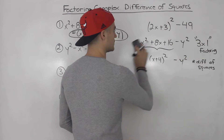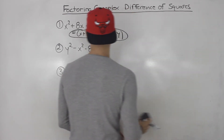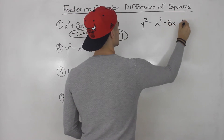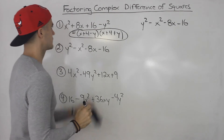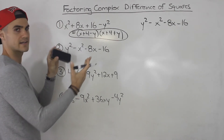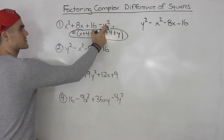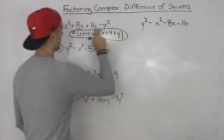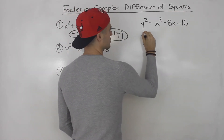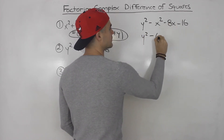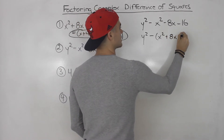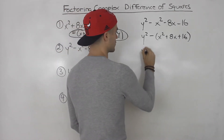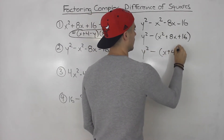Let's do number two. We've got y squared minus x squared minus 8x minus 16. Notice that this one is very similar to number one, but it's almost like the expressions have been swapped — the y squared is now at the beginning, and we have that same trinomial. The trinomial has different signs, but what we can do is factor out a negative from all three of those, and we'd be left with x squared plus 8x plus 16. That's a perfect square trinomial, so you would end up with x plus 4 squared.